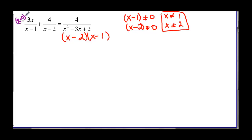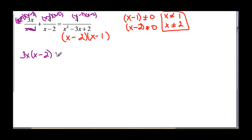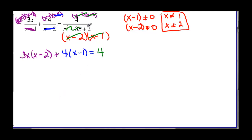In the first term, the x minus ones cancel, leaving three x multiplied by x minus two. Then in the second term, the x minus twos cancel, leaving four multiplied by x minus one. On the right side, x minus two cancels x minus two, and x minus one cancels x minus one, leaving just four.